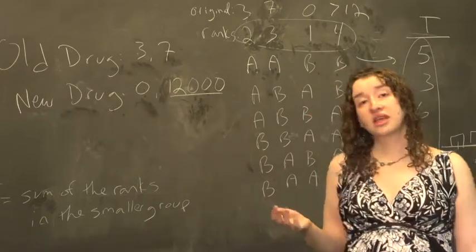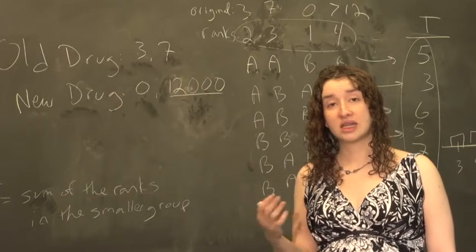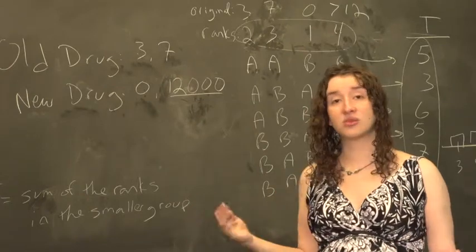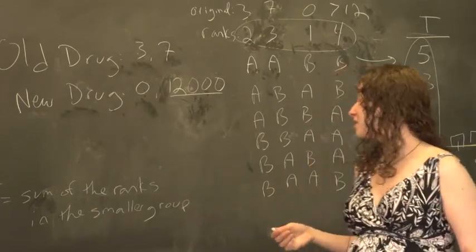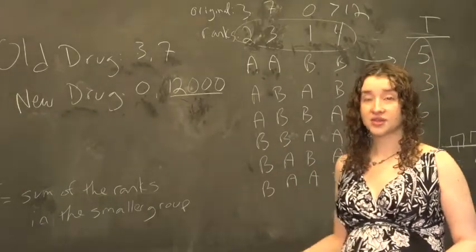Like all randomization tests, the rank sum test is appropriate if we have a very small data set because we don't have to make any assumptions that anything follows a normal distribution or anything like that. This is appropriate for small sample sizes, appropriate for censoring, and appropriate for outliers.